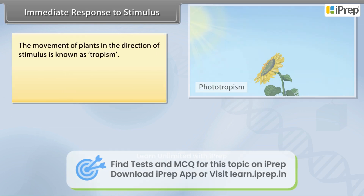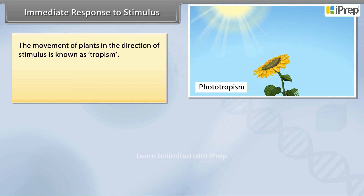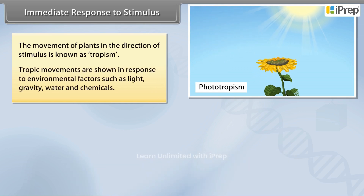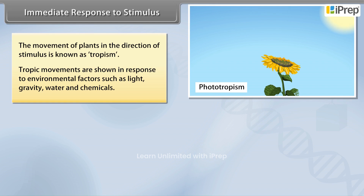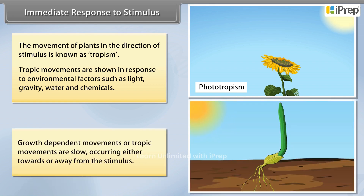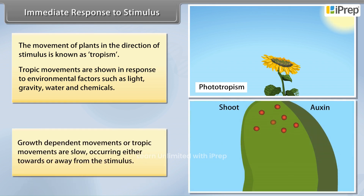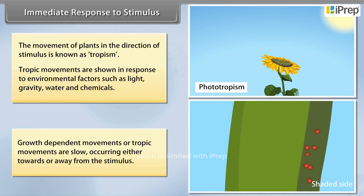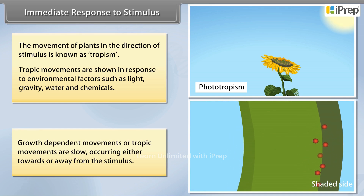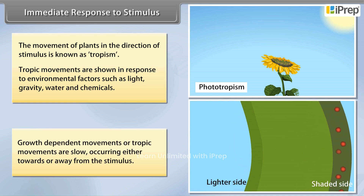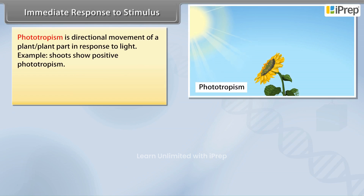The movement of plants in the direction of a stimulus is known as tropism. Tropic movements are shown in response to environmental factors such as light, gravity, water, and chemicals. Growth dependent movements, or tropic movements, are slow and occur either towards or away from the stimulus.